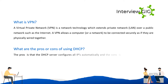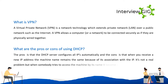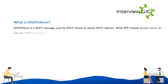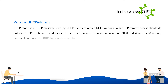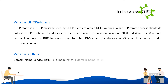What are the pros and cons of using DHCP? The pros: the DHCP server configures all IPs automatically. The cons: when you receive a new IP address, the machine name remains the same because of its association with the IP — this can cause access issues. What is a DHCP Inform? A DHCP Inform is a DHCP message used by DHCP clients to obtain DHCP options. Windows 2000 and Windows 98 remote access clients use DHCP Inform to obtain DNS server IP addresses, WINS server IP addresses, and a DNS domain name.